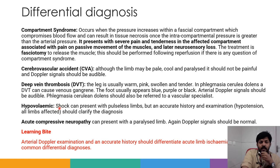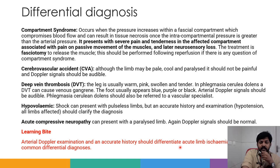Hypovolemia is common in the emergency department — a patient in shock can present with pulseless limbs, but all limbs will be affected. Acute compressive neuropathy can present with a paralyzed limb, but Doppler signals should be normal. The key learning point is that arterial Doppler examination and an accurate history should differentiate acute limb ischemia from other common differential diagnoses.